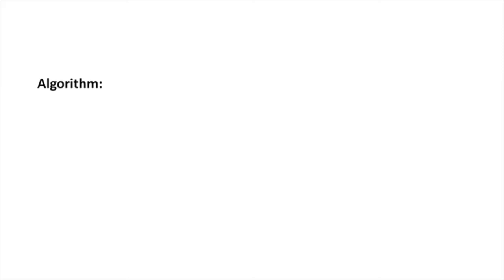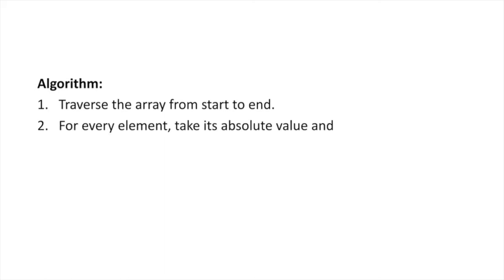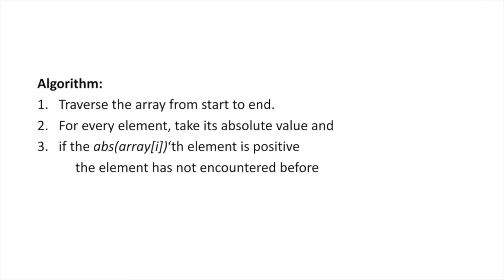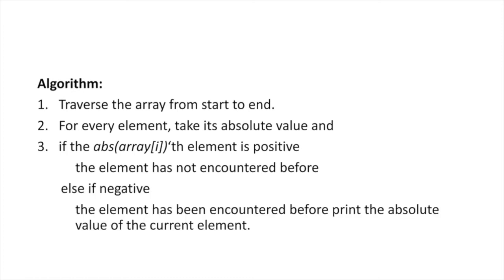Now let's look at the algorithm we are going to use. First, we traverse the array from start to end. For every element, we take its absolute value and check if the element at that index is positive or negative. If it is positive, this element has not been encountered before — it's the first time we're seeing it. If it is negative, this element has been encountered before, meaning it is repeated, so we print that current element.